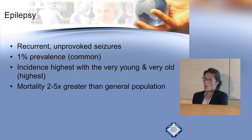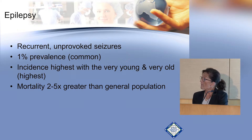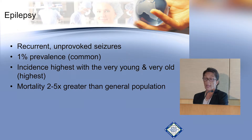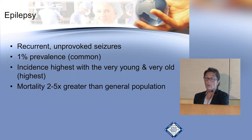The incidence of new onset seizures is actually the highest in the elderly, which was always thought to be in neonates and infants, but now the elderly have surpassed the young. The mortality of people with epilepsy is probably two to five percent greater than the general population. There is a condition called SUDEP — Sudden Unexplained Death in Epilepsy Patients — which is a tricky topic to approach but one we have to discuss with our patients.